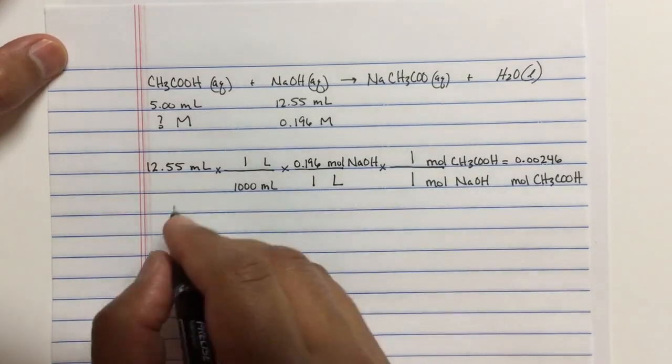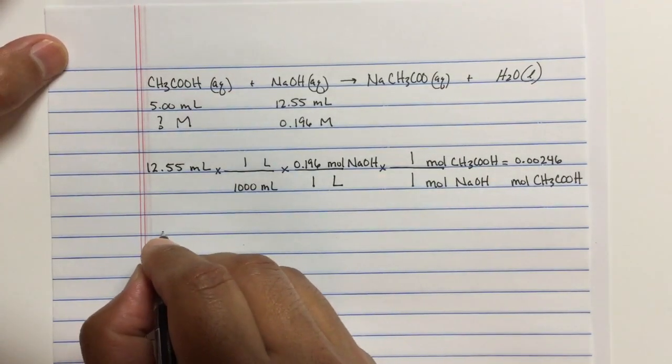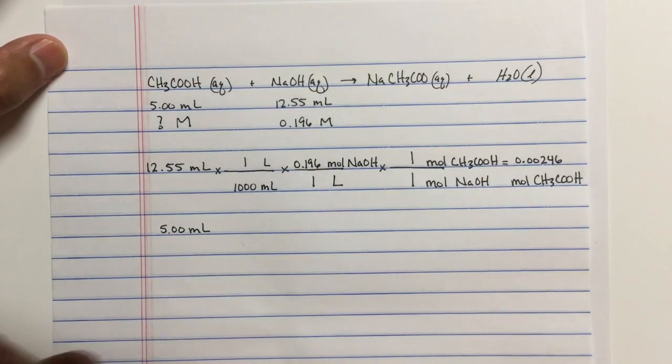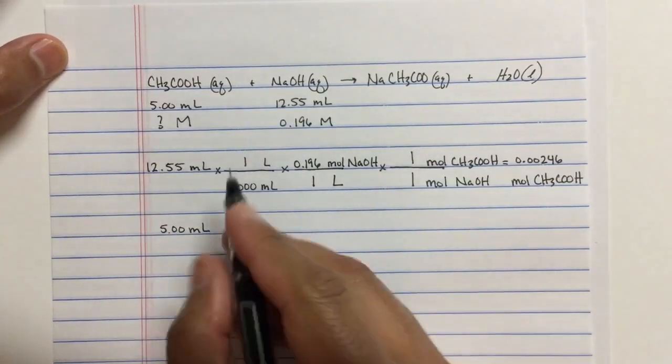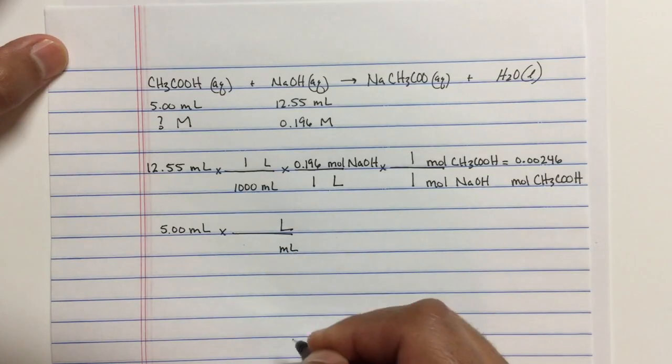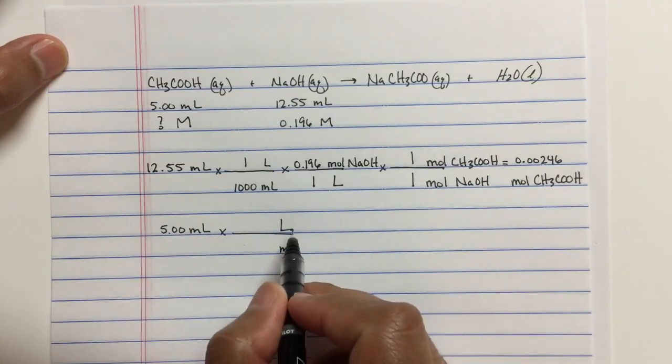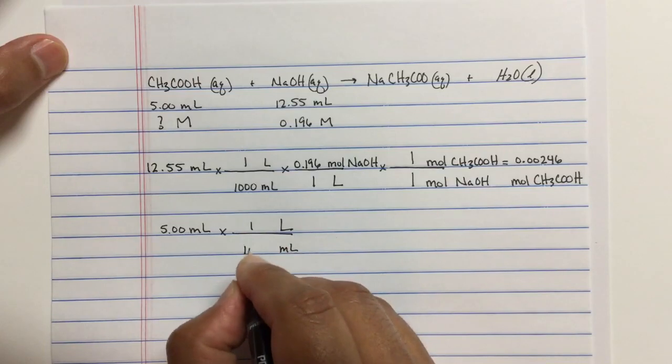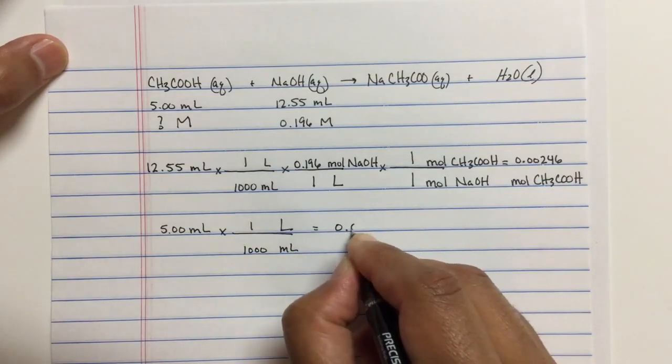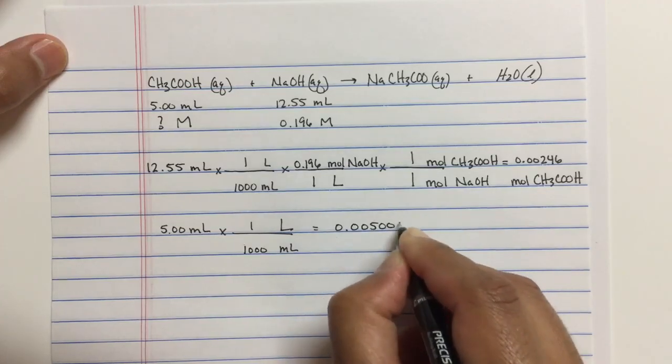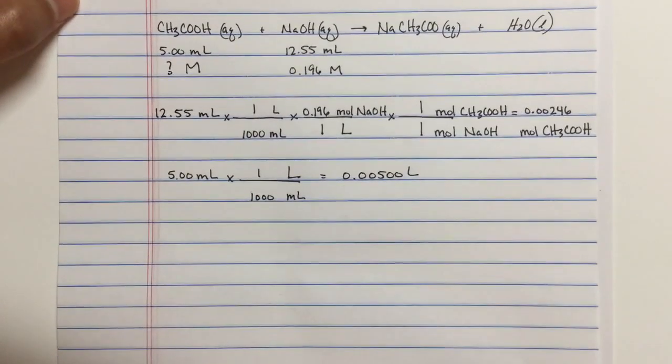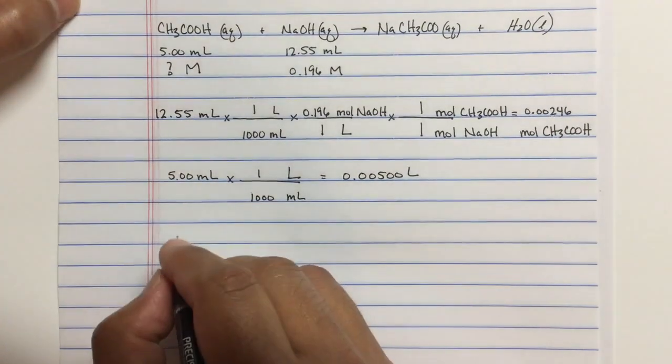Okay. So we know the moles of acetic acid. What about the volume? Well, we know that the volume of acetic acid is five milliliters. That's how much we started with. But of course, we need to know the liters of solution. So we'll convert to liters and cancel milliliters.